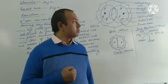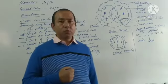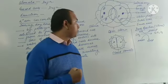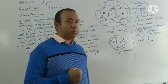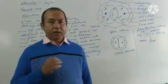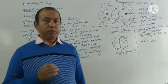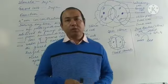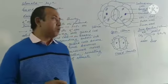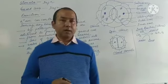Starch is a polymer whereas glucose is a monomer, which is the smaller unit. So this is about dark reaction. The next topic we need to learn is the opening and closing of stomata.